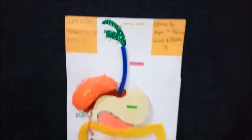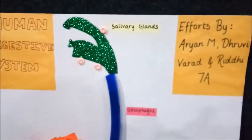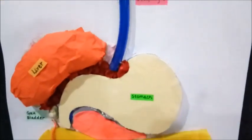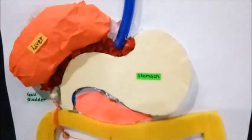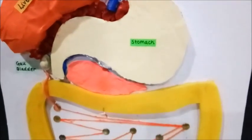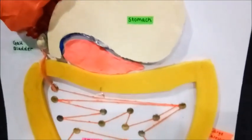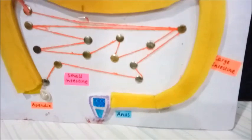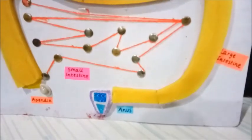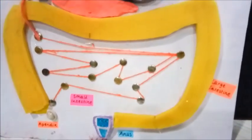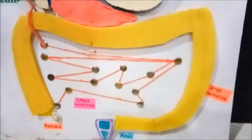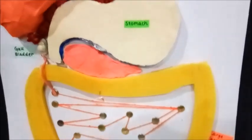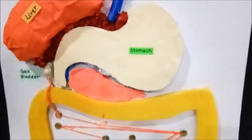From the esophagus, food travels to the stomach. The stomach contains HCL which digests the food, and the walls of the stomach contain mucus. From there the food passes into the small intestine.